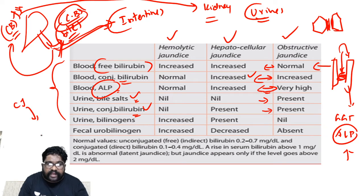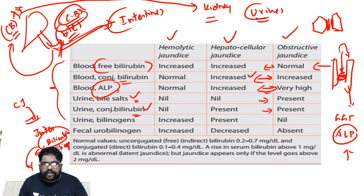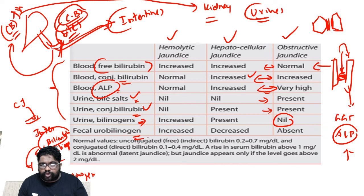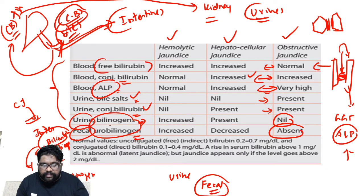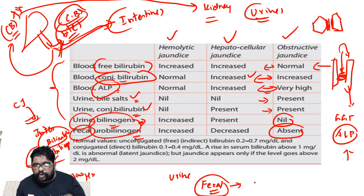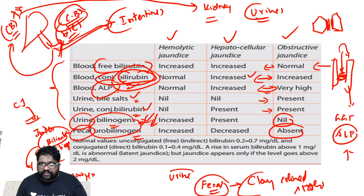In obstructive jaundice, if conjugated bilirubin did not enter the intestine, there was no chance of deconjugating bilirubin into urobilinogen. Whatever bilirubin that was deconjugated would be converted into urobilinogen or stercobilinogen in the GIT — and both will be lesser. Because fecal urobilinogen and urine urobilinogen are absent, urine can be high-colored due to the presence of conjugated bilirubin, while fecal material can be clay-colored because fecal bilirubin is absent.